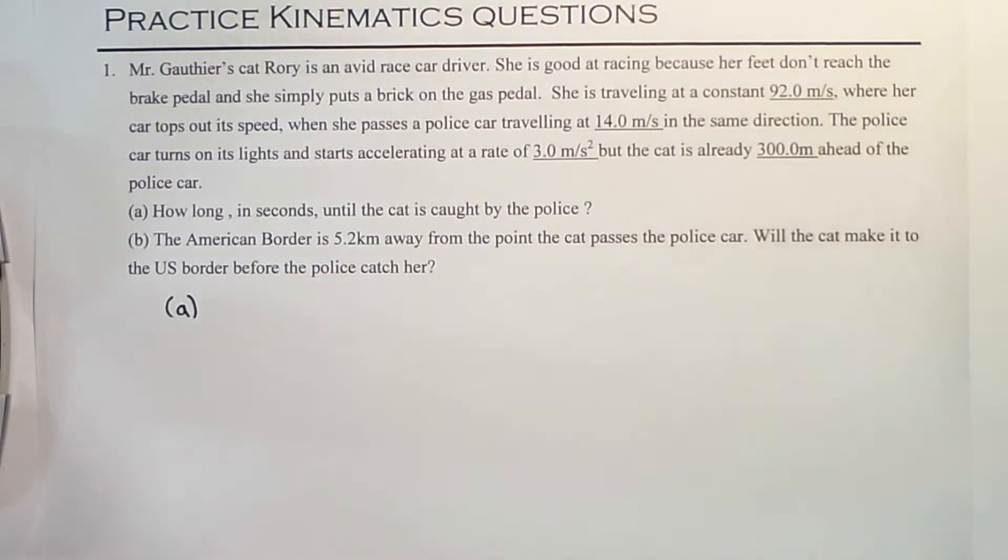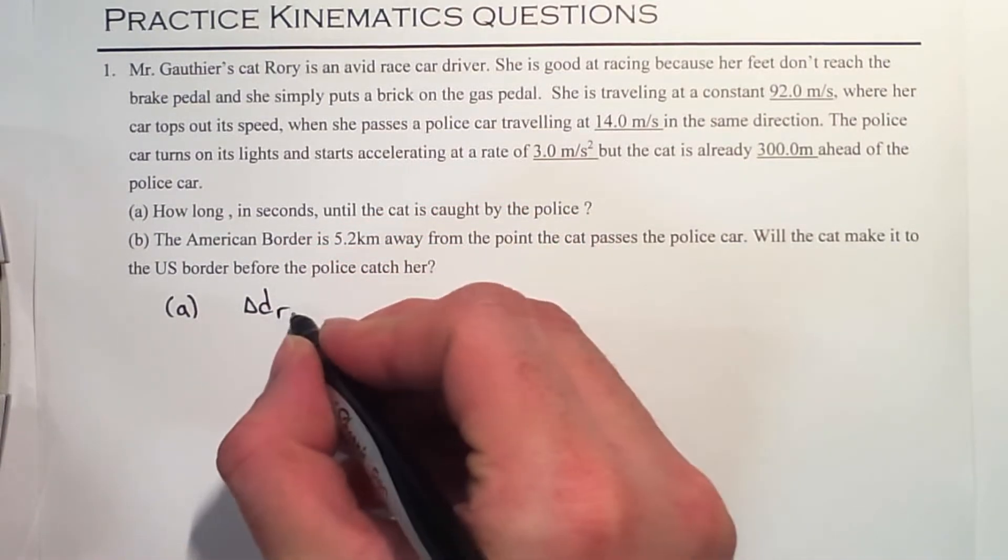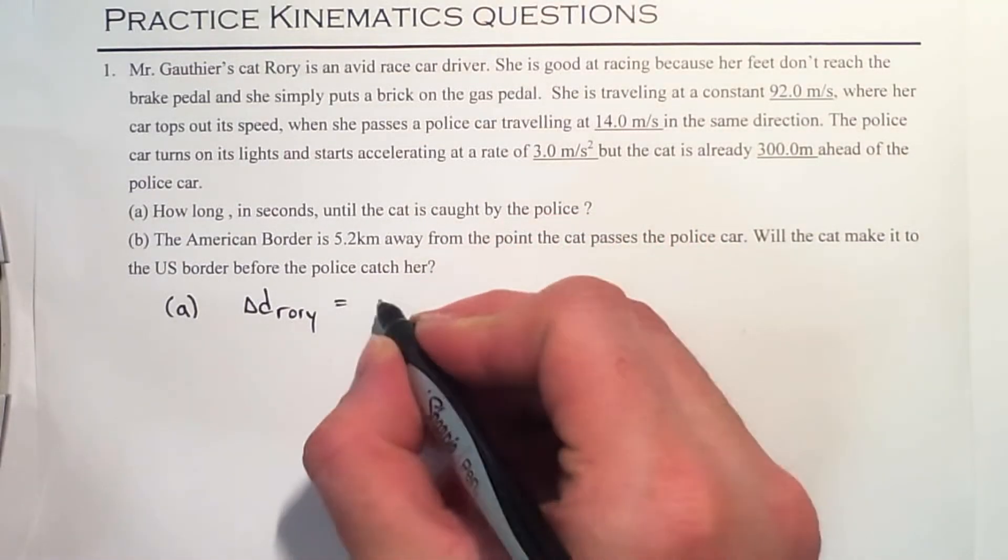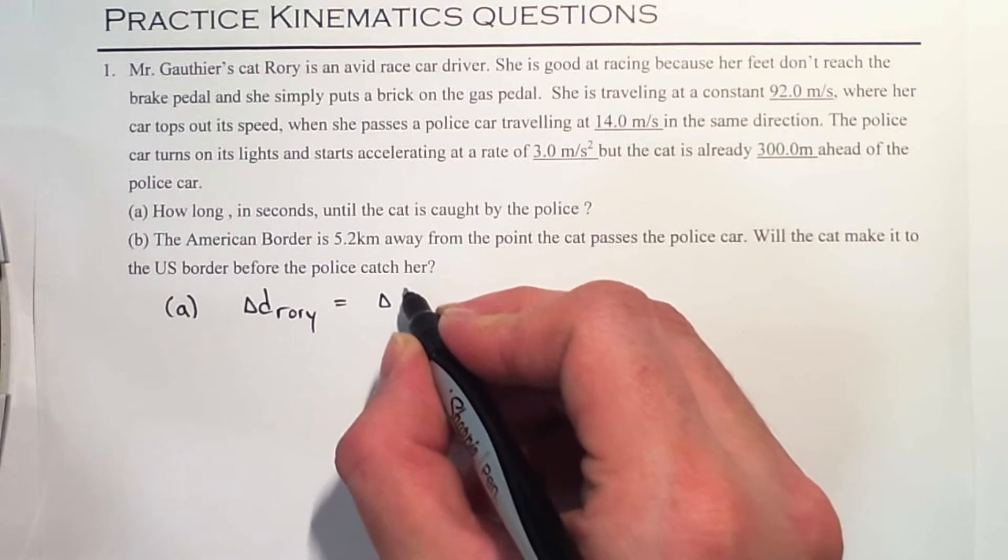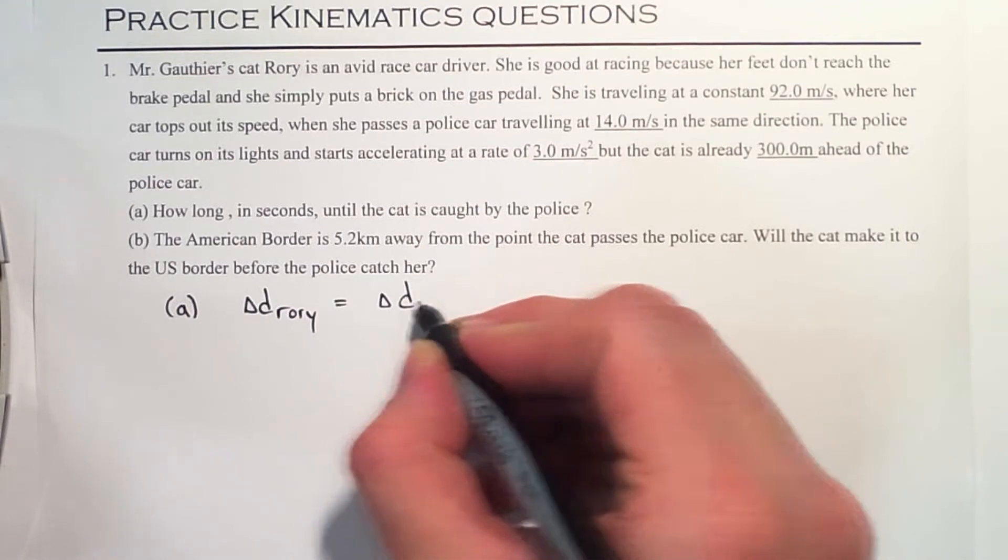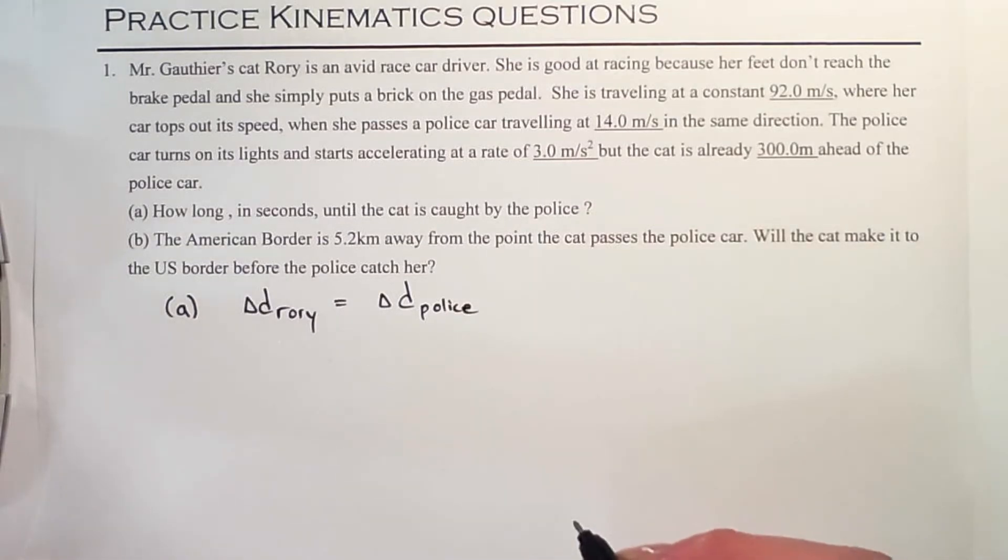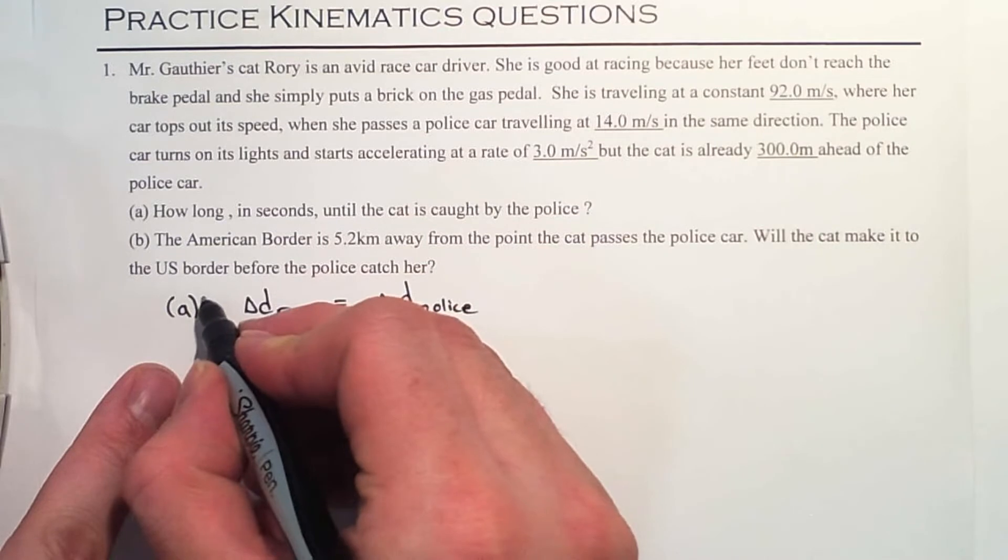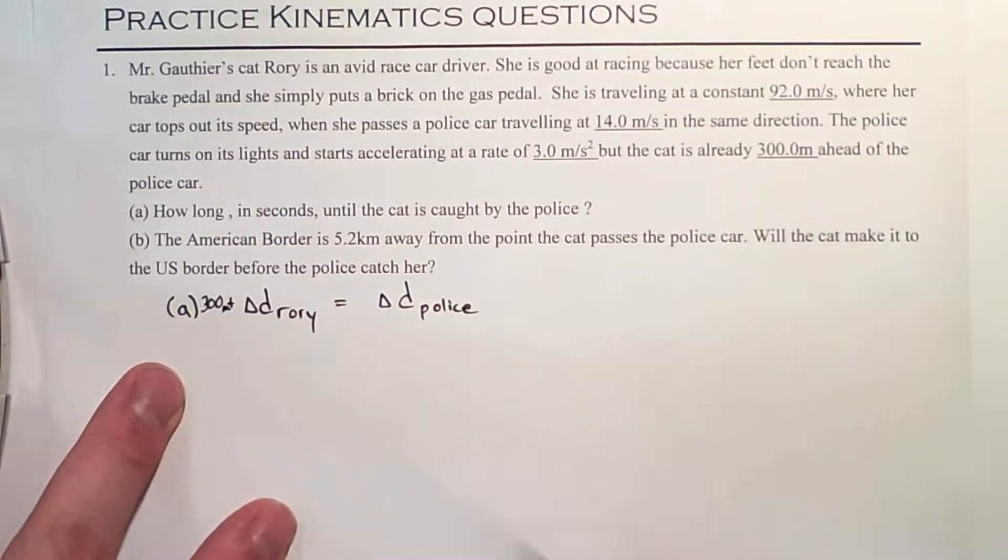Well, when they catch up, we know something's going to be true. We know that the displacement of Rory, I guess my cat, is going to be equal to the displacement of the police car. But we have this 300 meters to work in. So it's going to be 300 meters ahead.